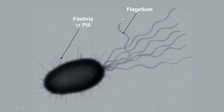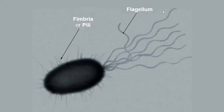A couple of F-words: fimbriae (or pili) and flagellum. You can see the size difference — flagella are much, much larger than fimbriae. Adding to our notes: flagella are also made out of proteins, and their function is for motility, which is basically swimming.